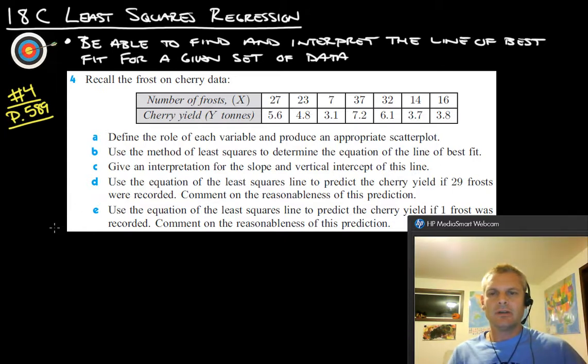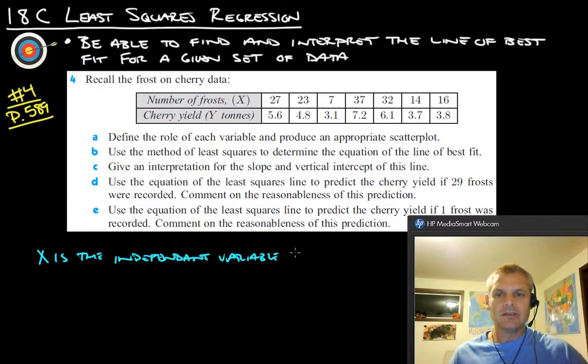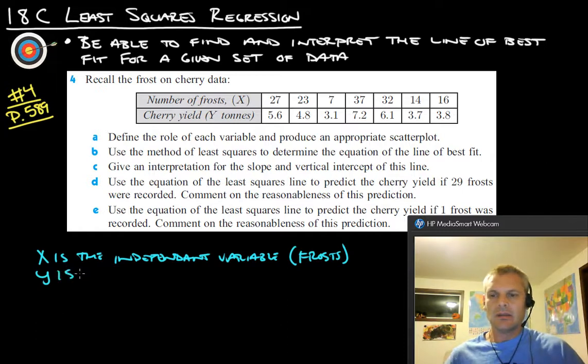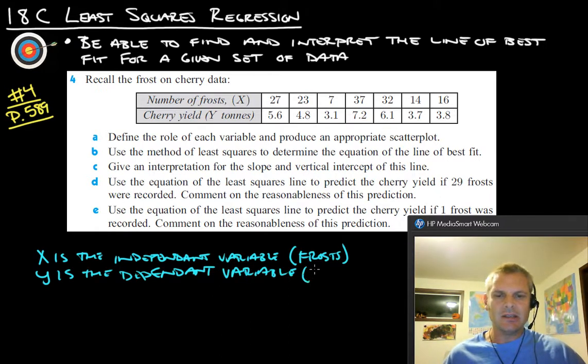And it says define the role of each variable and produce an appropriate scatter plot. So each variable. They already tell us we've got that the cherry frost is X and that the cherry yield is Y. So if you'll remember, let's get a color that works here. So X is the independent variable. Right, that's what we get to control. And that is, in this case, the frosts. And then Y is the dependent variable. Dependent variable. And in this case, that's the cherry yield.